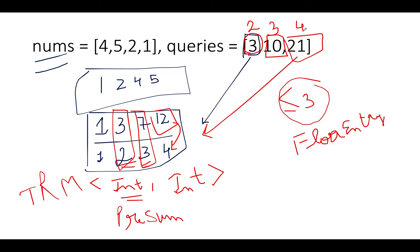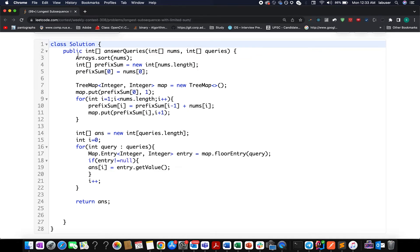Let's quickly walk through the code. The first thing I've done is sort the array. Moving ahead I've created the prefix sum and initialized prefix sum at the zeroth index equals to nums at the zeroth index. At line number 7 I've created the tree map. I've put in the first number, the prefix sum at the zeroth index into the tree map comma 1 because it corresponds to one element count.